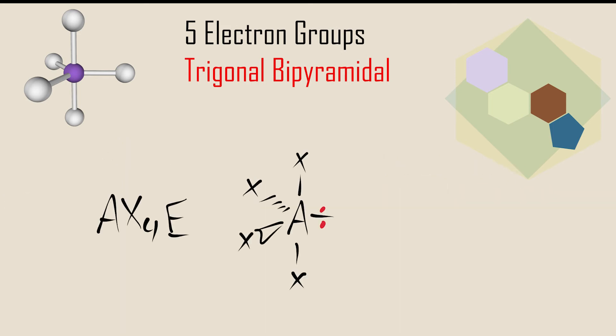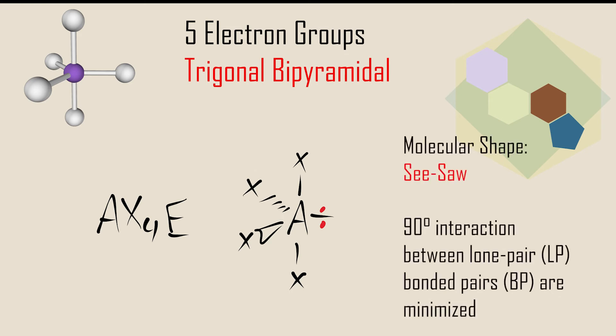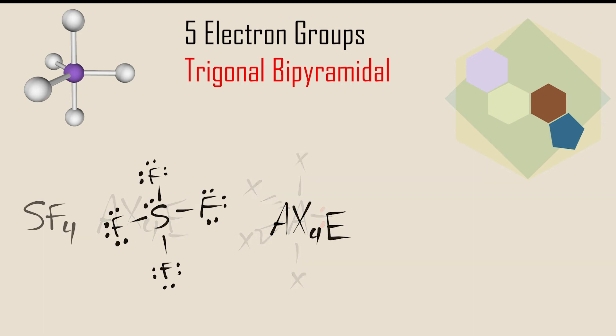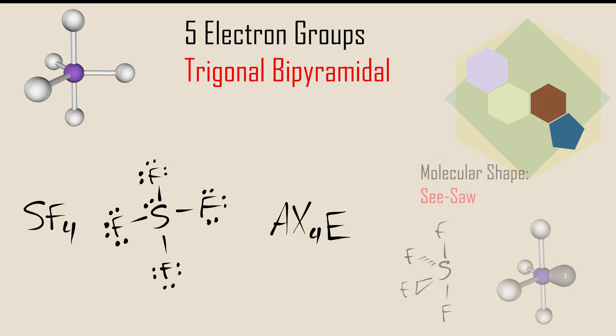When one lone pair is present in a molecule with a central atom with five electron groups, the molecule has a seesaw shape. Sulfur tetrafluoride is a molecule which can be designated AX4E, as the central atom is surrounded by four atoms and one lone pair of electrons. The electron group geometry remains trigonal bipyramidal, but the molecular shape is seesaw.